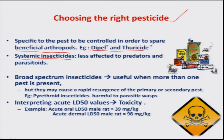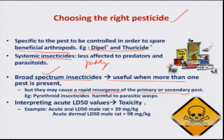Sucking pests can be very effectively controlled with systemic insecticides, and the formulation is also most important. The granular formulation of systemic insecticides in a paddy ecosystem effectively controls the stem borer as well as the brown plant hopper while sparing the predators and parasitoids associated with the crop. When more than one insect is present — defoliator, sucking pest, or borers — the use of broad spectrum insecticide is advisable, but there may be rapid resurgence of minor pests assuming major status. This has been seen particularly when pyrethroids are used in a paddy ecosystem, and they also bring down the population of parasitoid wasps.